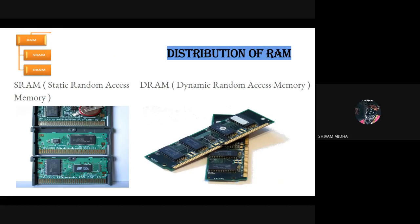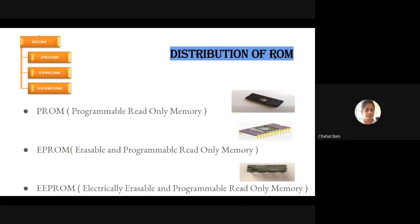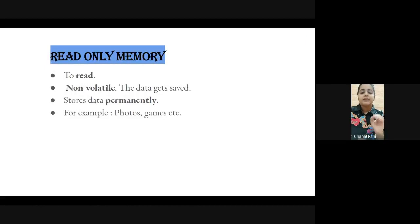RAM is divided into two parts: SRAM and DRAM. SRAM stands for Static Random Access Memory - a constant power supply must be given to hold the data. DRAM stands for Dynamic Random Access Memory - there is no need to provide constant power supply; it uses transistors and capacitors to store data. ROM stands for Read Only Memory. It is non-volatile, therefore data is permanently saved.